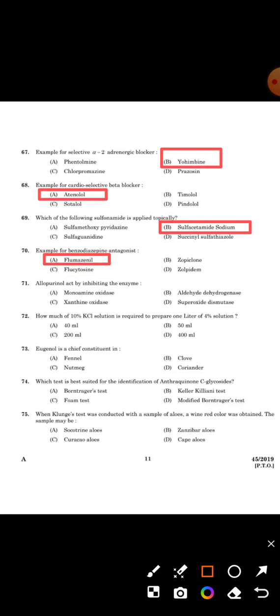Next question: Allopurinol acts by inhibiting the enzyme. The answer is Option C, Xanthine Oxidase.